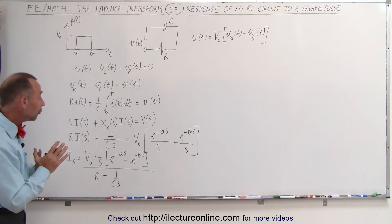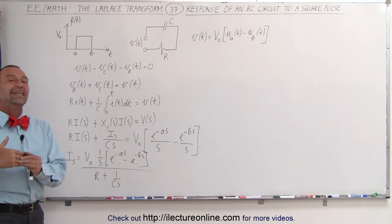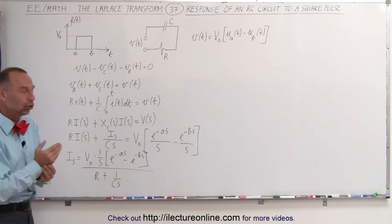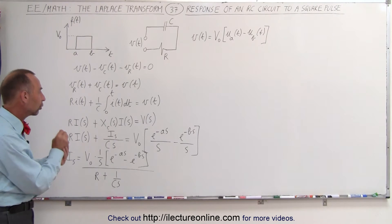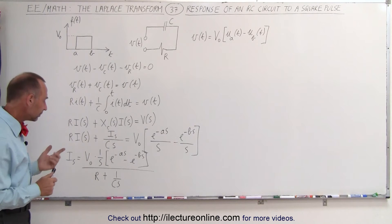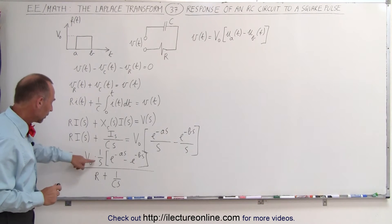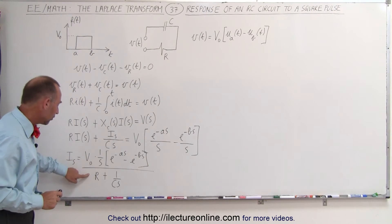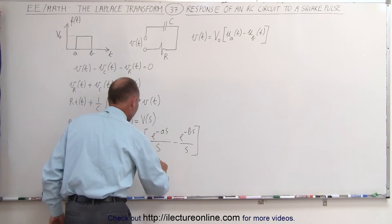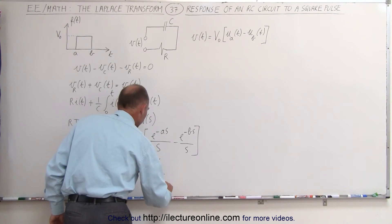Now we take this equation and apply the inverse Laplace transform to get the solution for the current in the time domain. A trick we can use is to move the S to the denominator and multiply both the numerator and denominator by 1 over R.